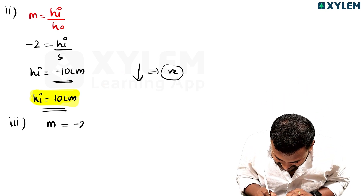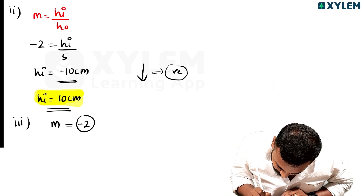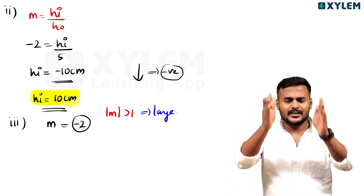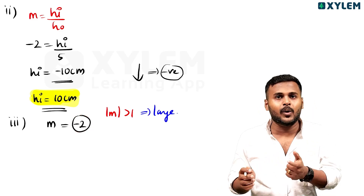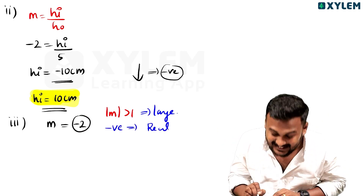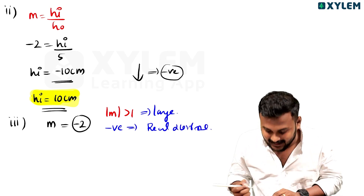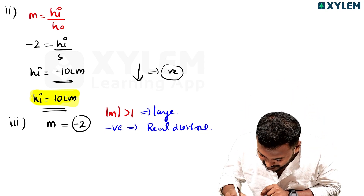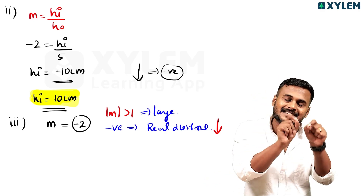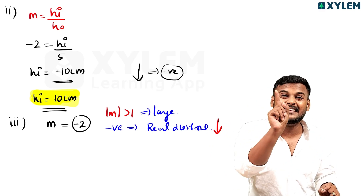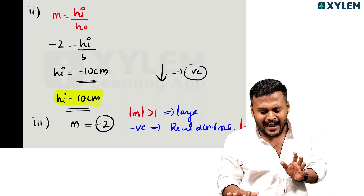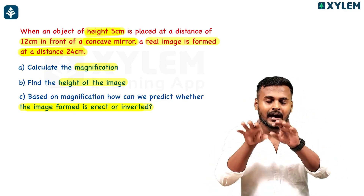Magnification is minus 2. The modulus of m is greater than 1 — modulus of minus 2 is 2 — so that means the image is enlarged. It is negative, which means it is an inverted image. So the image is real, inverted, and enlarged. That's the whole image conclusion — this is the end of the solution.